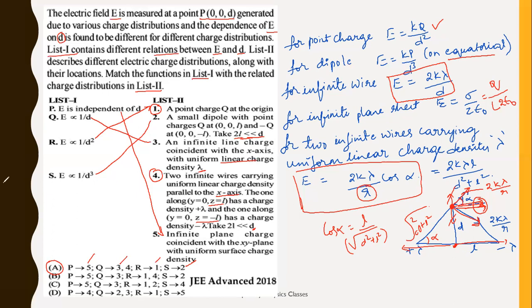As I have been teaching, you need to remember all the equations for electric field and electric potential. If you remember them, you can directly write down the electric field for a point charge, for a dipole, for an infinite wire, and for an infinite plane sheet. For the fourth case with two wires, you need to derive it. Using these equations, you can directly determine the dependence of E on D and match List 1 to List 2.